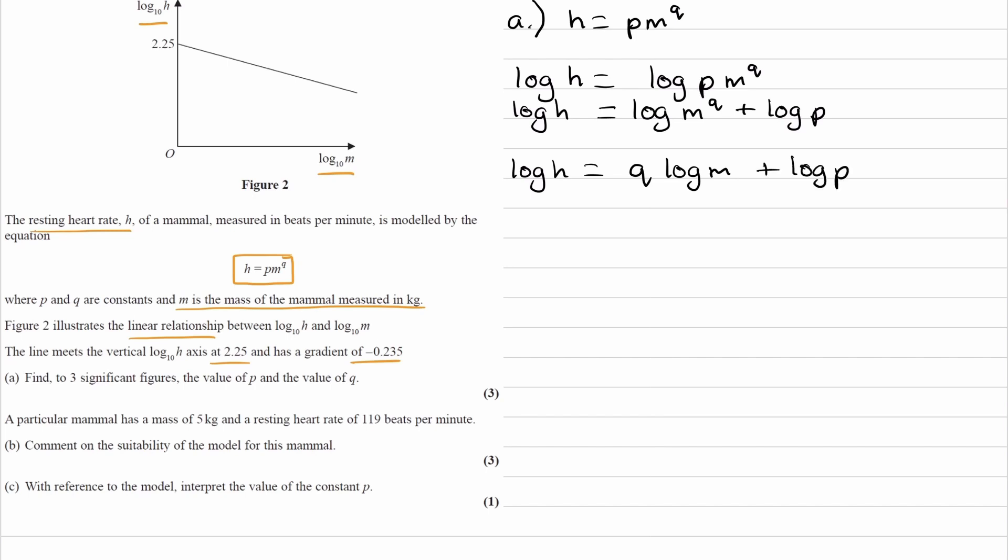And then if we think about what's on the axes of the graph that we have, this is y, log to the base 10 of h is y, and log to the base 10 of m is x. So then at the bottom of this equation, if we write this is y, this is x, this must therefore be the gradient, and this must therefore be the y-intercept.